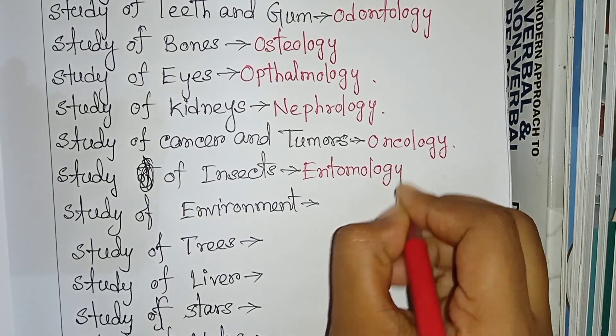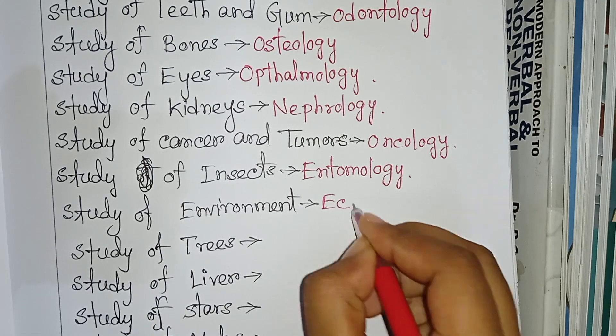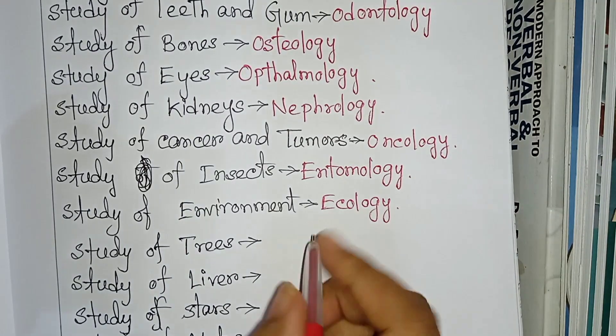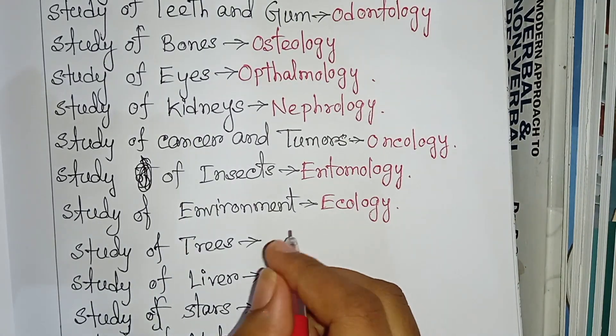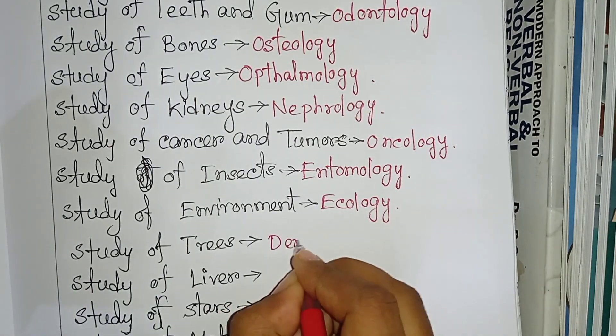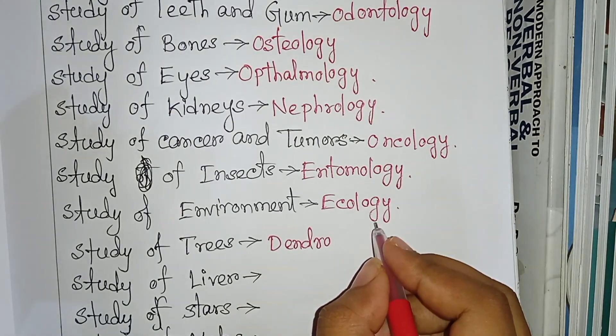Study of insects: entomology. Study of environment: ecology. Study of trees: dendrology.